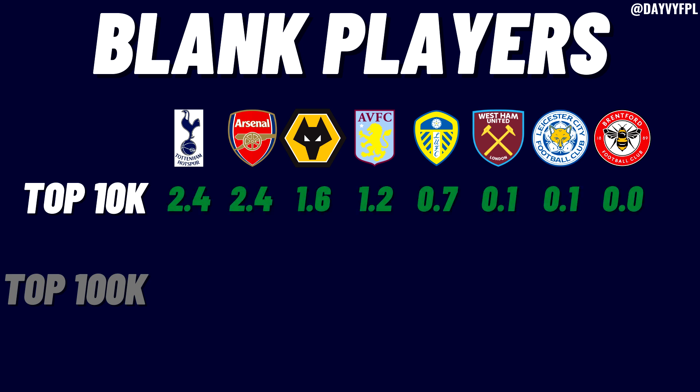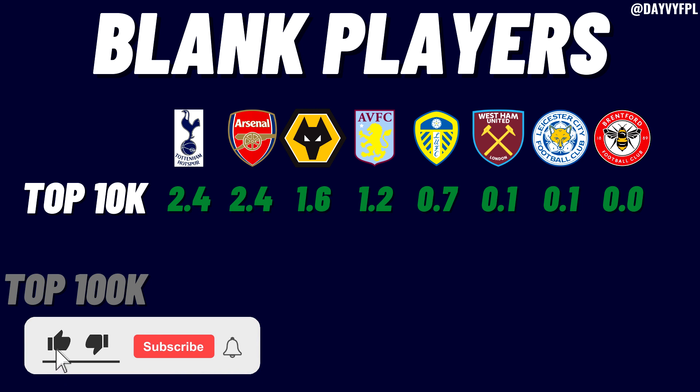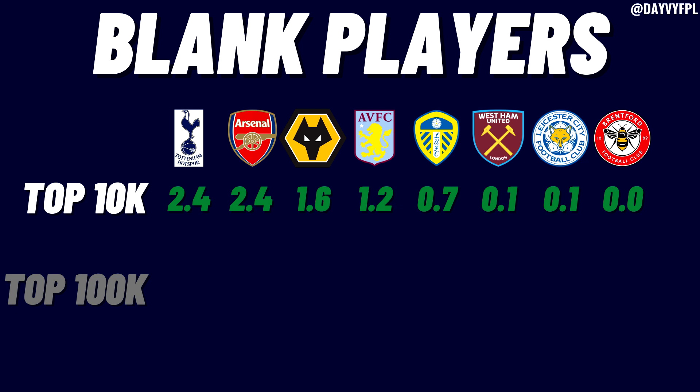In the top 10k, Arsenal and Spurs both come in at a 2.4 average each — many managers tripled up on the North London teams. Wolves follow at 1.6 and Aston Villa at 1.2. Leeds sit at 0.7, West Ham and Leicester both at 0.1, and Brentford at effectively zero — 0.03 average.